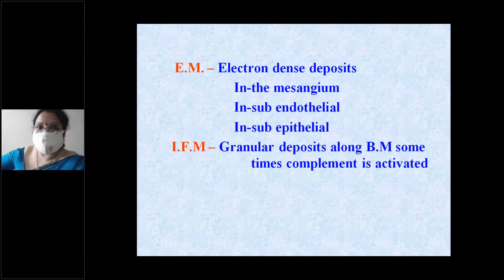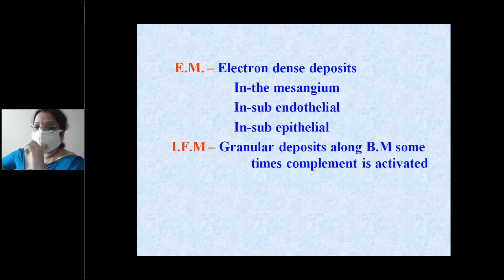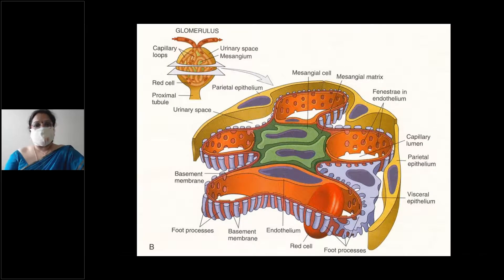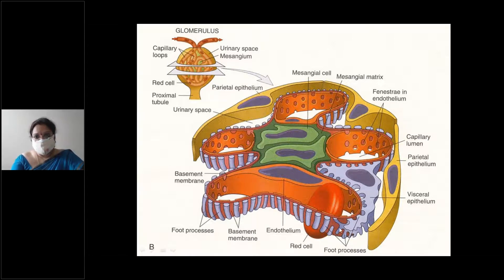On electron microscopy, you can determine exactly where immune complexes are deposited — whether mesangial, subendothelial, or subepithelial. On immunofluorescence, you can distinguish whether deposits are granular or show a diffuse linear pattern. The glomerular structure consists of parietal epithelium as the outer lining, visceral epithelium as the inner lining, with the urinary space between them.